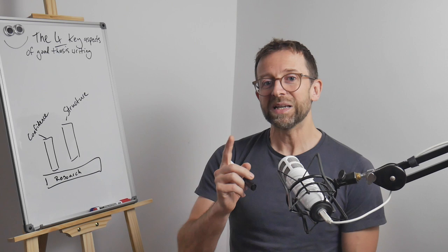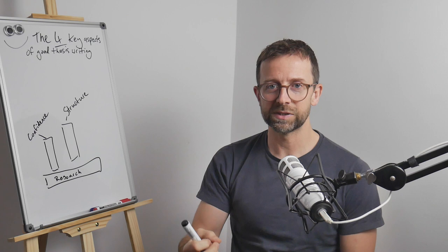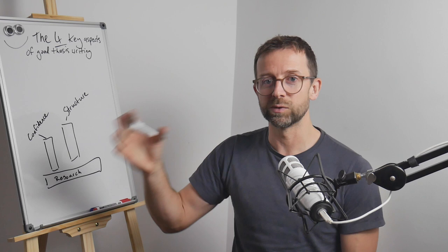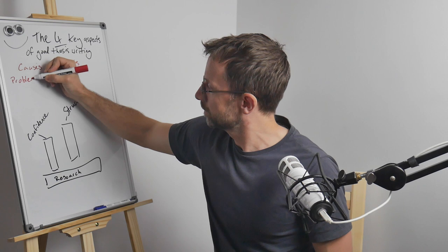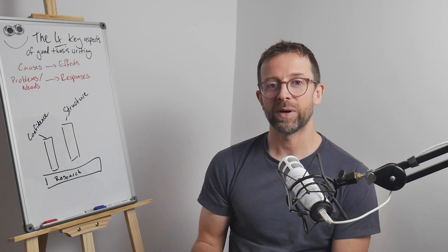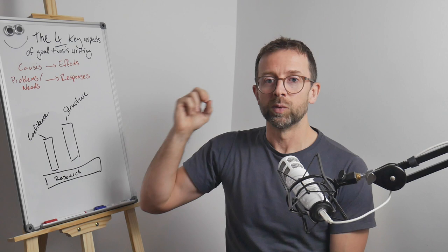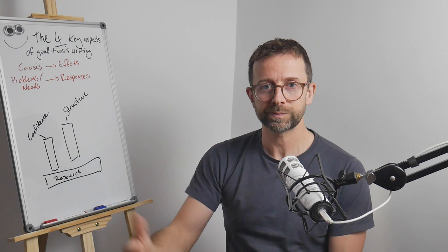The basic idea of structure is to think about the relationships between ideas in terms of causes and effects, or needs and problems and responses to those needs and problems. For example, when you're writing about your research methods, instead of just describing all of the things that you've done, you can think about them as responses to the problems that you need to solve in order to conduct your research.